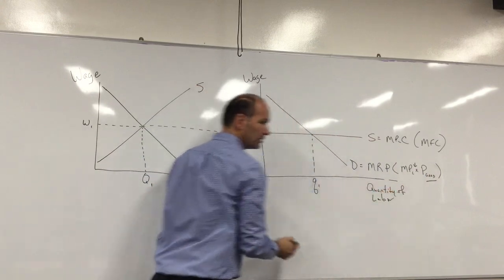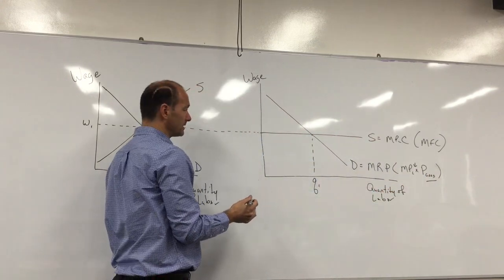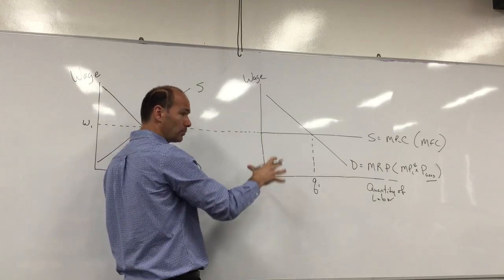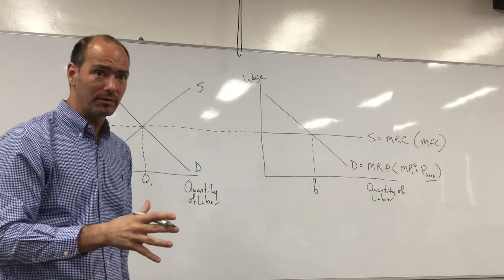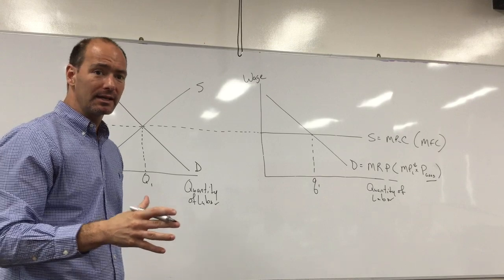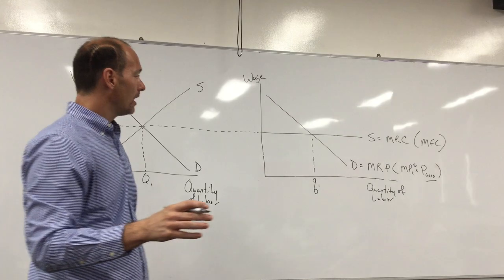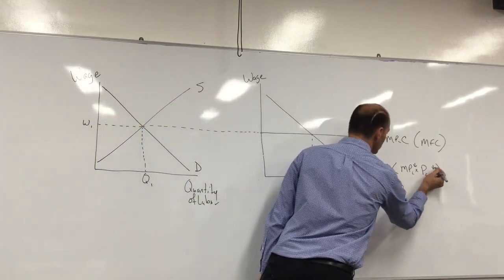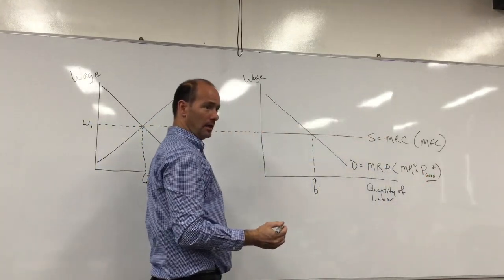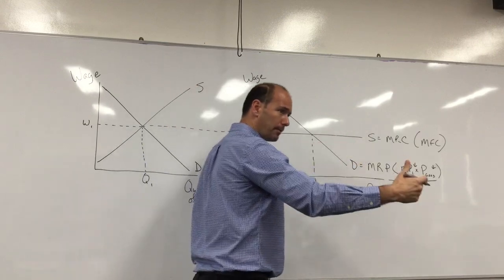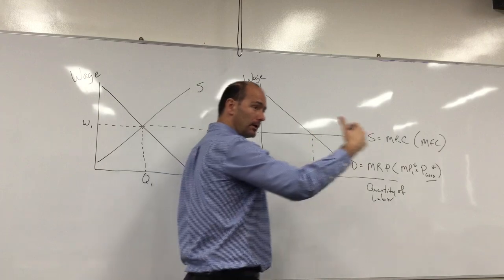Now, if a business were competing in an imperfectly competitive market like an oligopolistic or monopolistically competitive market, then price would also be reducing as you hire more workers, right? Because when you hire more workers, you get more output, and with more output in an imperfectly competitive market with a downward-sloping demand curve, the price will be reducing.